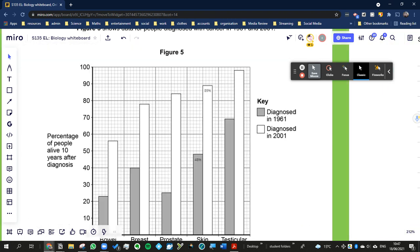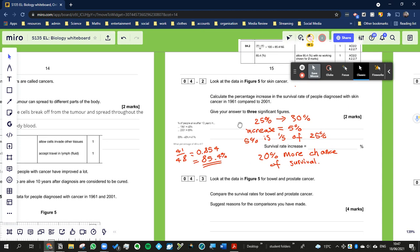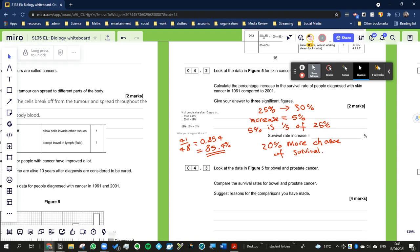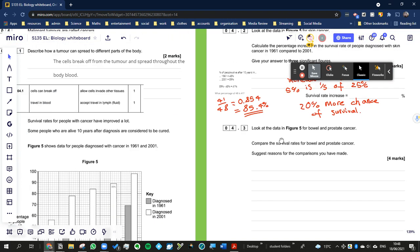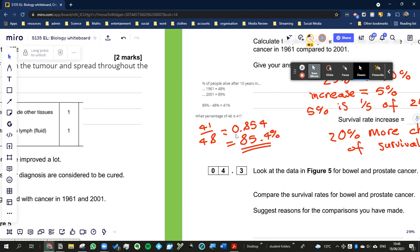Now the actual increase—let's just read the question again. So it's saying calculate the percentage increase in the survival rate of people diagnosed with skin cancer. What's the percentage increase? Well, a lot of people what they would do is just go, well it went up from 48 to 89 so the difference is 41%.